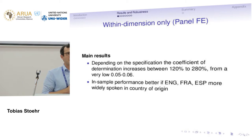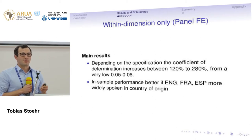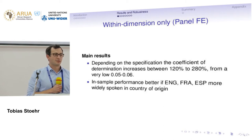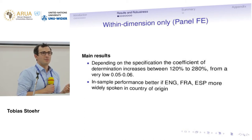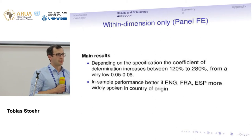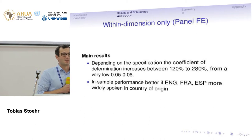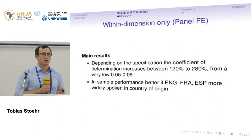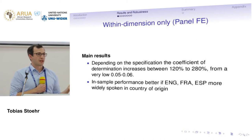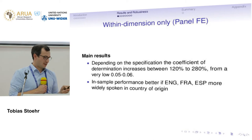The main result: depending on which specification we use, the within R-squared of these regressions increases by at least 100% and can sometimes almost quadruple. We use a model by Ana Maria Maida as a benchmark. With her specification we get an R-squared of about 0.06, and that increases to roughly twice that, or even up to 0.2 if we look at specific subgroups.